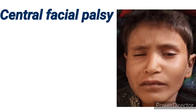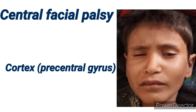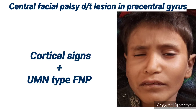Regarding the level of lesion in central facial nerve palsy: if the lesion is in the cortex — specifically the lower one-third of the contralateral precentral gyrus in the facial area — the child will have UMN-type facial nerve palsy along with other cortical signs such as convulsions or altered level of consciousness. Etiology should be suspected according to onset and progression. Acute or sudden onset with cortical signs suggests infarct or hemorrhage; subacute progressive onset suggests intracranial space-occupying lesions such as tuberculoma, neurocysticercosis, or other tumors.